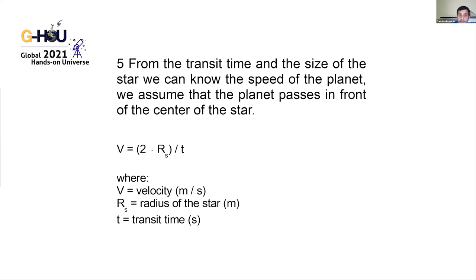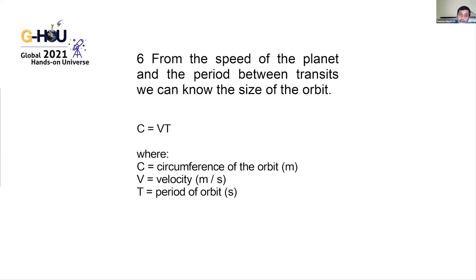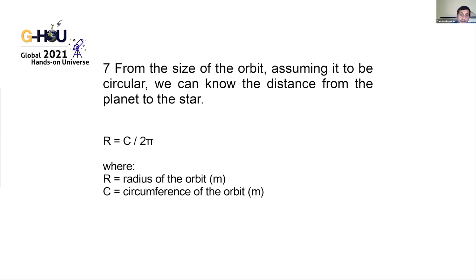From the transit duration and the size of the star, we can calculate the speed of the planet, assuming the planet passes in front of the center of the star. From the speed of the planet and the period between transits, we can determine the size of the orbit. Assuming the orbit is circular, we can calculate the orbital radius and the distance from the planet to the star.